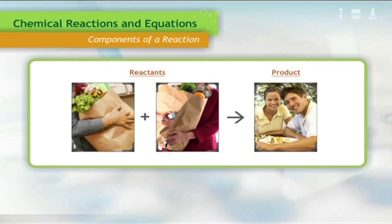Using the example of the grocery bags and dinner, let us discuss chemical equations. When writing an equation, the reactants are normally placed on the left side, with a plus sign between each reactant.